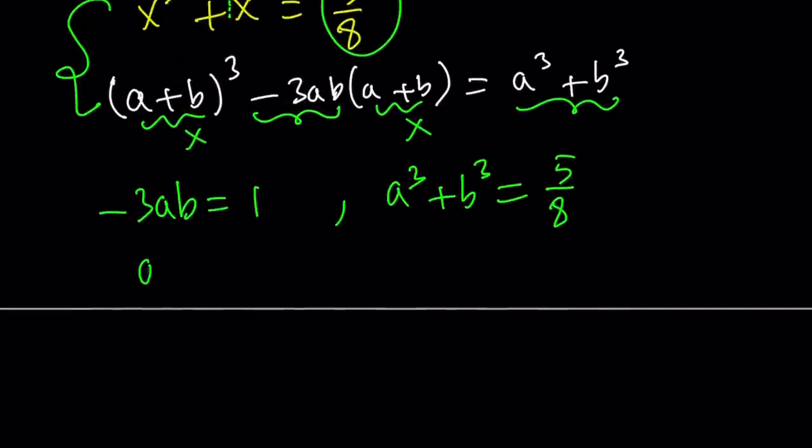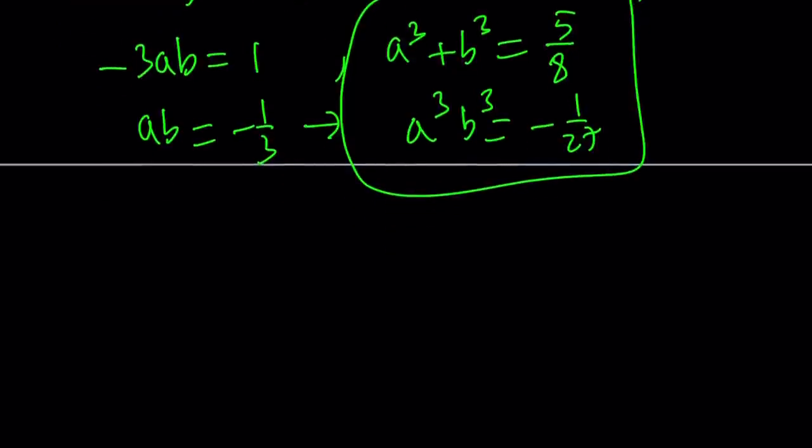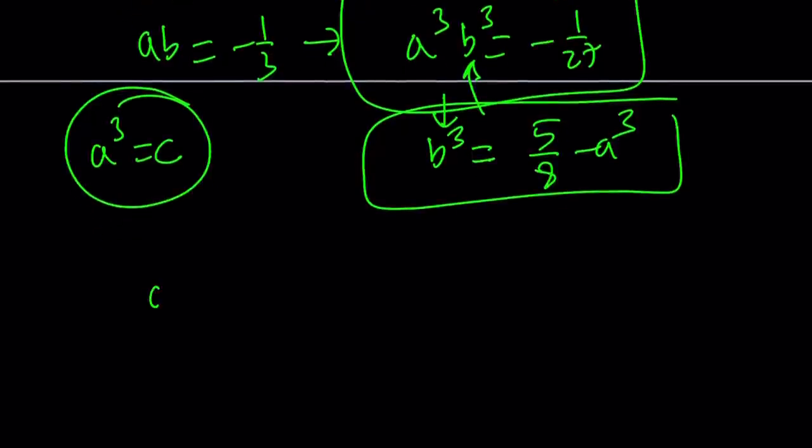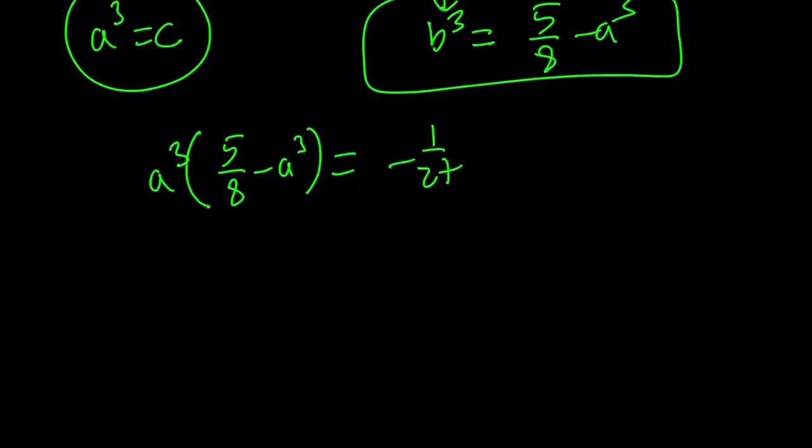Let's solve for a: ab equals negative one third. Let's cube both sides. a cubed b cubed equals negative 1 over 27. So we got a system, and this system is not cubic, it's quadratic. But let's make substitution again. Set a cubed equal to c. And from the second equation, isolate b cubed. b cubed is equal to 5 over 8 minus a cubed. And then plug it into the first equation. The reason why we're only subbing for a cubed is because we're going to get an equation in a single variable. So now this gives us the following: a cubed times b cubed, which is 5 over 8 minus a cubed, equals negative 1 over 27. I know this equation doesn't look very pleasant, but it'll resolve. Set a cubed equals to c. So you're going to get 5 over 8c minus c squared equals negative 1 over 27.